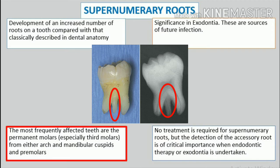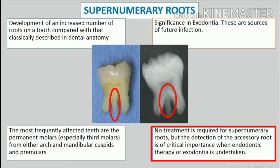The most frequently affected teeth are the permanent molars, especially third molars, from either arch, and mandibular cuspids and premolars. No treatment is required for supernumerary roots, but the detection of the accessory root is of critical importance when endodontic therapy or exodontia is undertaken.